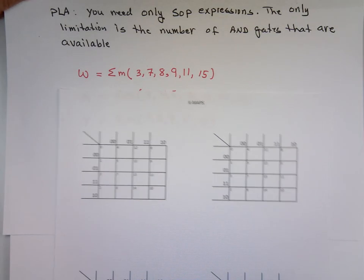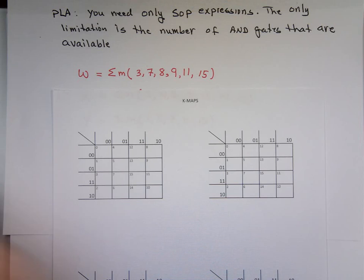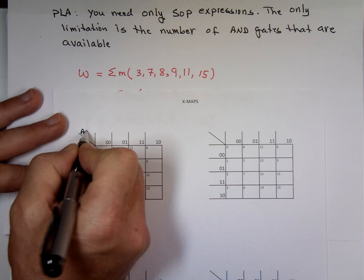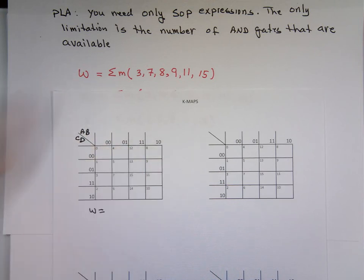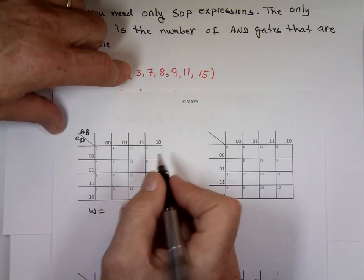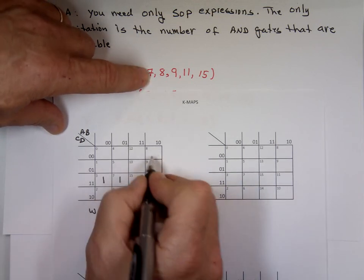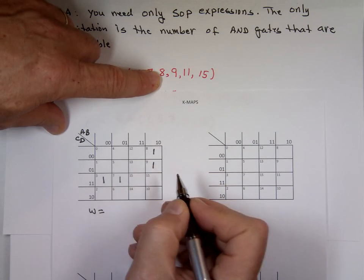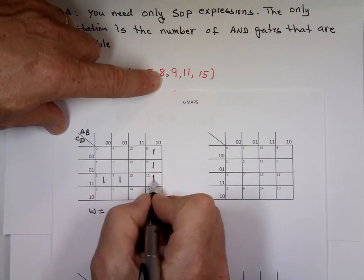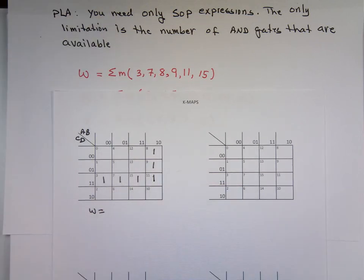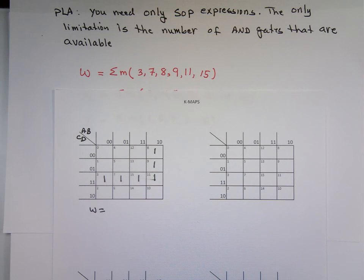So I'm going to do a K-map for each one of these. Let's do one for W. Can you still see W there? And I have A and B here, C and D. W has a value of 1 at 3, at 7, at 8, at 9, at 11, and at 15. And I know what you're thinking. Oh, group these four. But be patient.